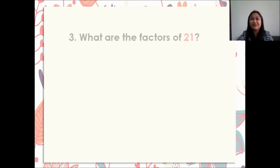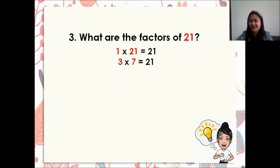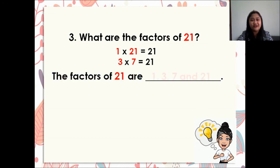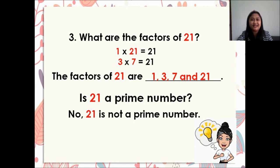Next, number 3: what are the factors of 21? We have 1 times 21 is equal to 21, and 3 times 7 is equal to 21. Therefore, the factors of 21 are 1, 3, 7, and 21. Is 21 a prime number? No, 21 is not a prime number.